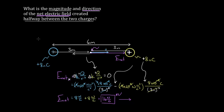To recap: to find the total electric field from multiple charges, draw the field each charge creates at the point of interest. Use the formula to get the magnitude of each contribution. Then decide whether each contribution is positive or negative based on the direction the field points — not the sign of the charge. Add up the contributions to get the total electric field at that point.